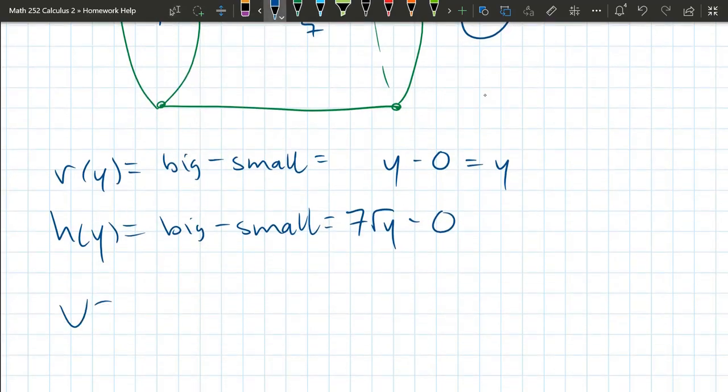And we do need our formula. This one is 2π∫rh dy. We're going to go a to b. We have a dy. 2π.